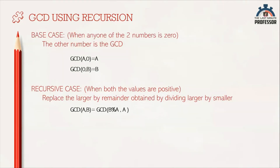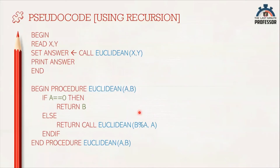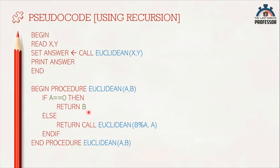Now let us dive deep into the pseudocode. Read two values x and y from the user. Call the Euclidean function by passing these two user inputs, store the result, and print the answer. When the function is called with x and y, the procedure receives x as A and y as B. The Euclidean function works as follows: if A is 0, return B. Else, return a call to the same Euclidean function with arguments B modulo A and A — simplifying the task to a smaller sub-problem.